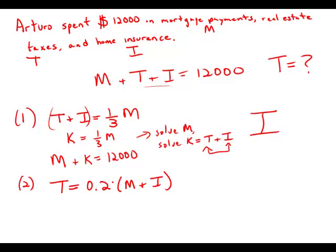A similar trick. Now we're going to glom together M and I and I'm just going to call that quantity Q. So T equals point two times Q. And then the given equation, we can write that as T plus Q equals 12,000. Well, now we have two equations with two unknowns. We can solve for T and we can solve for Q.